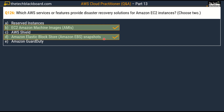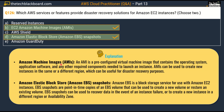Let's look at some more details on each of these services. Amazon Machine Images is a pre-configured virtual machine image that contains the operating system, application software, and any other required components needed to launch the instance. AMIs can be used to create new instances in the same or different region, which can be useful for disaster recovery purposes. Amazon Elastic Block Store Snapshots are point-in-time copies of an EBS volume that can be used to create a new volume or restore an existing volume, and can recover data in the event of an instance failure or create a new instance in a different region or availability zone.